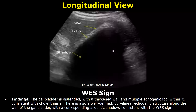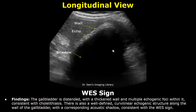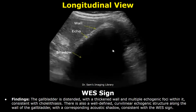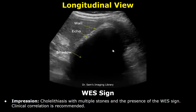Now we will look at the WES sign, which stands for wall echo shadow. It occurs when the gallbladder is completely filled with gallstones. In the findings, you can mention the thickened gallbladder wall and the multiple echogenic foci within the gallbladder, consistent with cholelithiasis. Then you can mention a well-defined curvilinear echogenic structure along the wall of the gallbladder with a corresponding acoustic shadow, consistent with the WES sign. In the impression, you can write cholelithiasis with multiple stones and the presence of the WES sign. Clinical correlation is recommended.